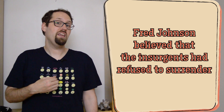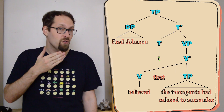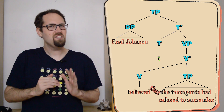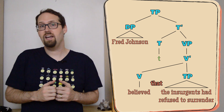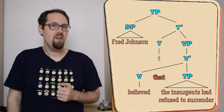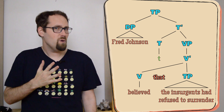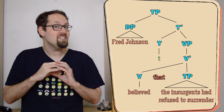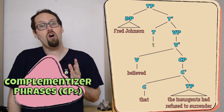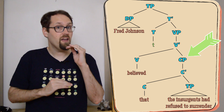Take this sentence: Fred Johnson believed that the insurgents had refused to surrender. One way to describe its structure is to just stick one full clause inside of another. The snag here is that there's no room left over for 'that' — it's not really part of the verb, and it can't really be part of the tense phrase either, since 'that the insurgents had refused to surrender' can't stand alone as a sentence. In order to make room for this class of word, linguists have supposed that embedded clauses actually come packaged inside CPs — complementizer phrases that serve as living quarters to complementizers, which is what we call words like that, whether, and if. These complementizers act as a kind of interface between the verb above and the clause below.